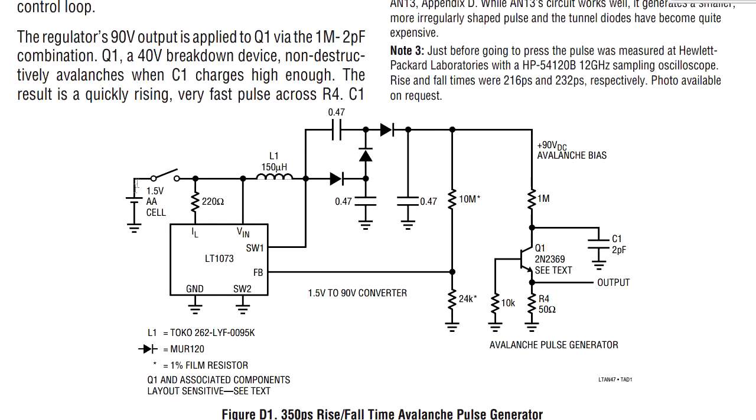But they're going to depend upon the specific hand selection of the avalanche transistor that we're using to generate this pulse. And here's the circuit here. And it basically just a single-cell converter to generate the 90 volts required to break down, avalanche breakdown, the transistor, which is a 2N2369.